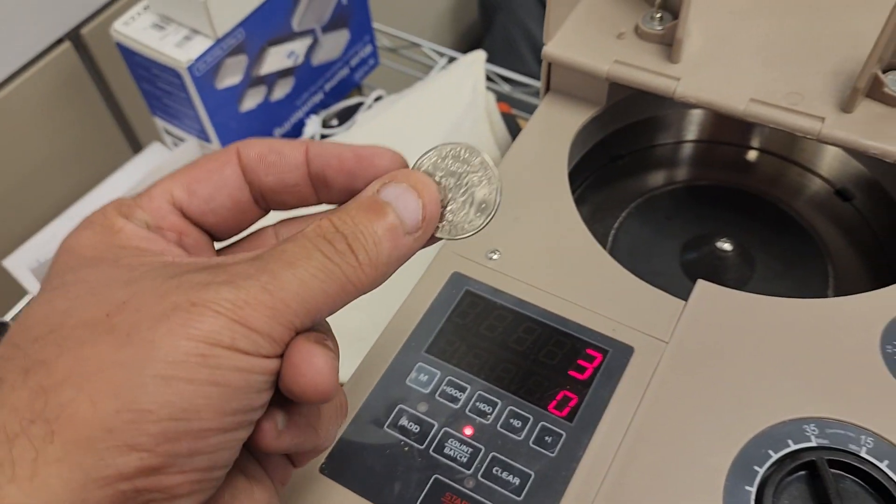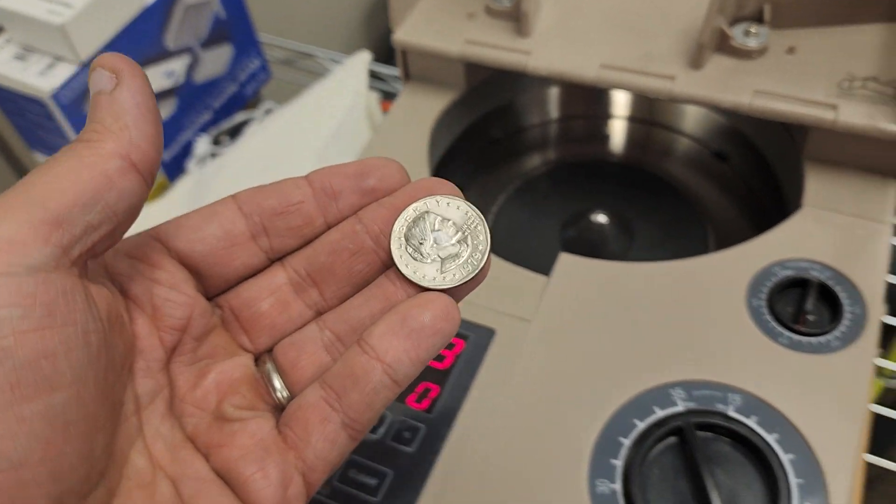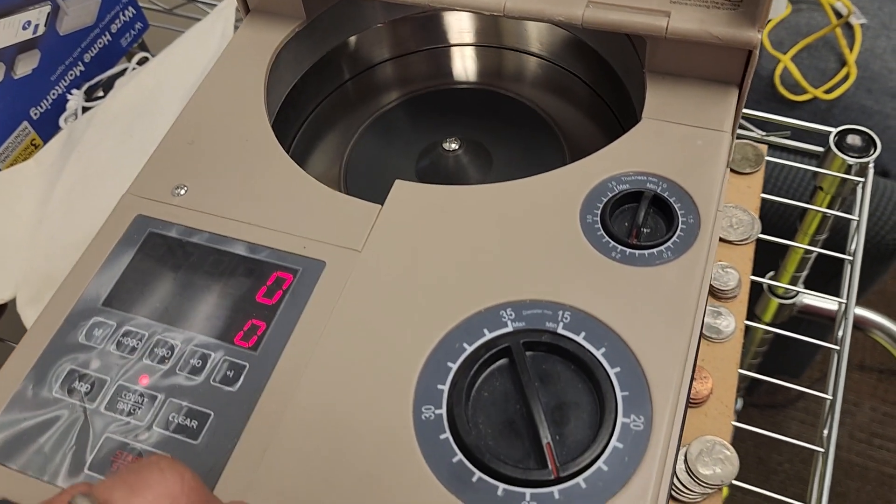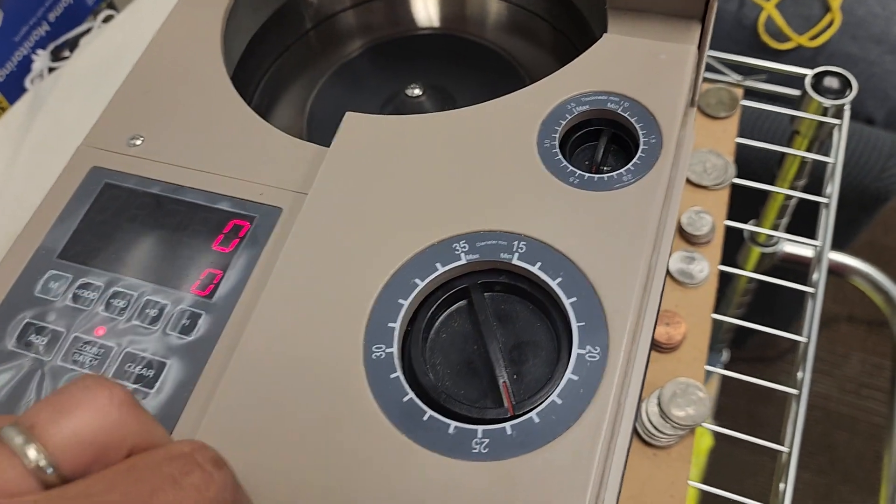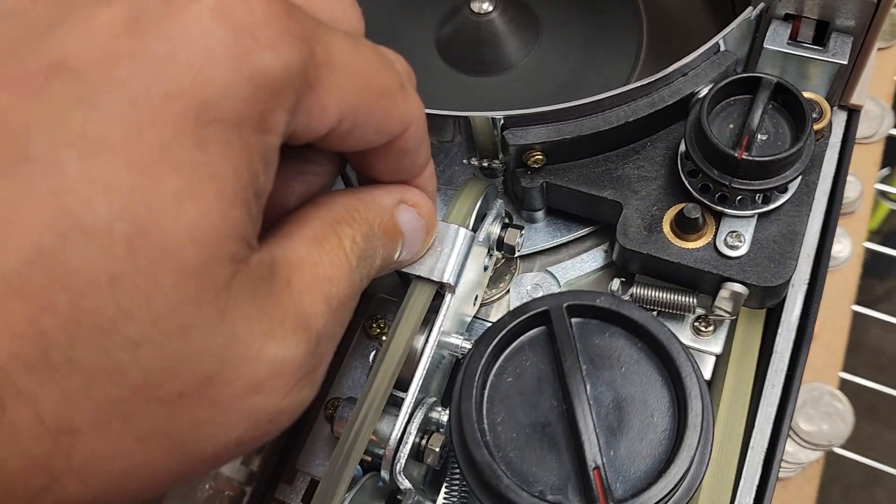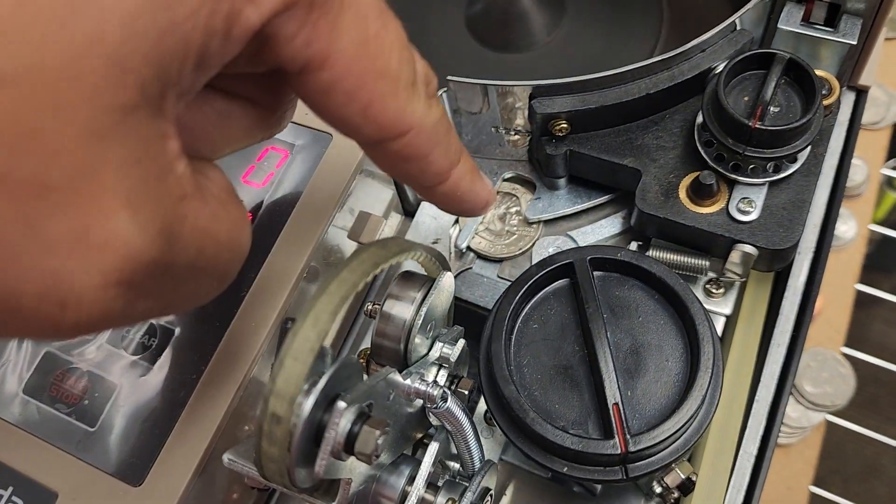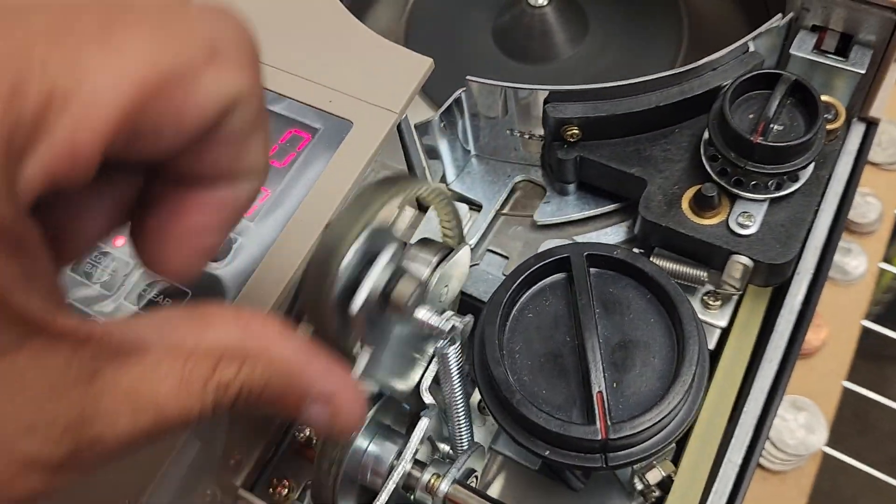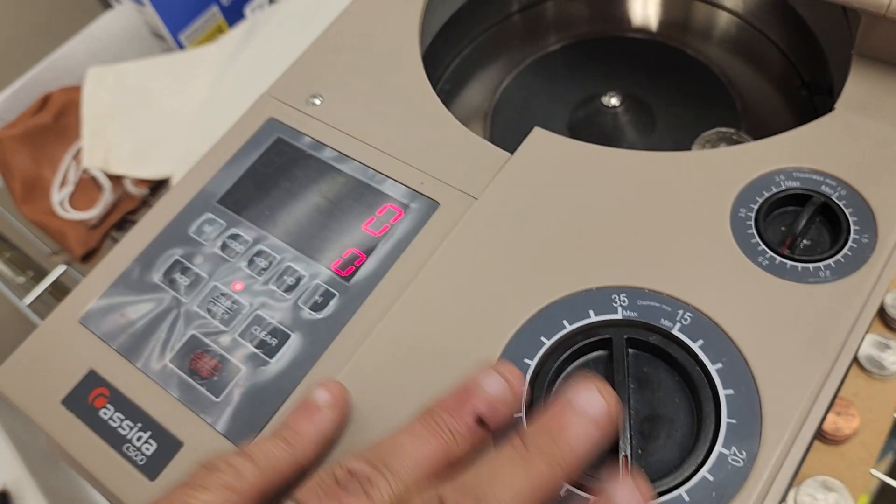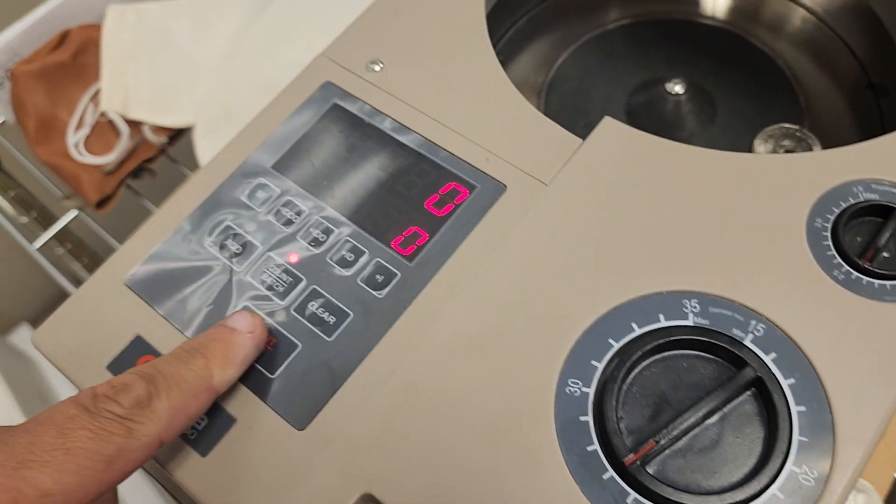Now the problem is you have to set it for whatever your largest coin is. If we set this for a dollar coin, it'll sort, it'll count, but what will happen, and I've wired this to not shut off due to safety concerns, so don't do this, is if you have a dollar coin in here, it'll just endlessly recycle and it won't count your dollar coin.